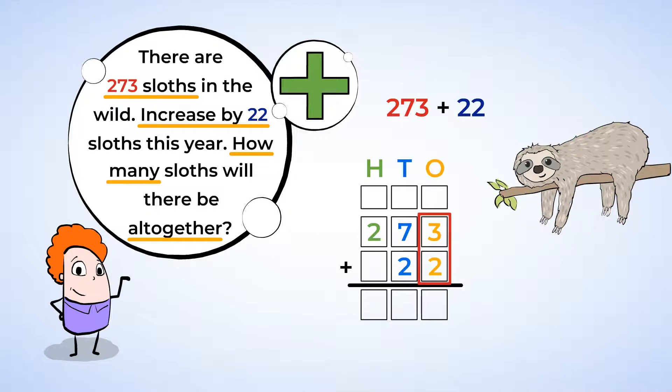Just like when adding two-digit numbers, you should always start with the ones place. 3 plus 2 is 5. Write 5 in the ones place of your answer. Move to the tens place. Add 7 and 2. 7 plus 2 is 9, so put a 9 in the tens place.